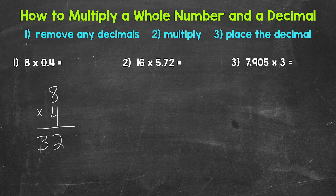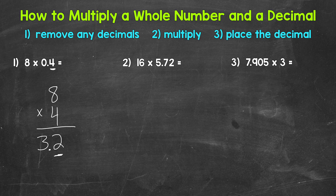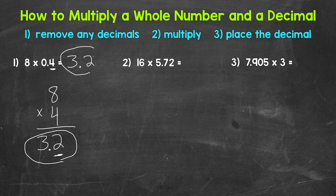Eight times four gives us 32. Now lastly, our third step: we place the decimal in our answer. We do that by looking back at the original problem and seeing how many decimal digits we have — how many digits are to the right of a decimal. We have one — this four right here. So our answer needs one decimal digit as well, and the decimal goes in between the three and the two. Our final answer is three and two tenths. Eight times four tenths equals three and two tenths.